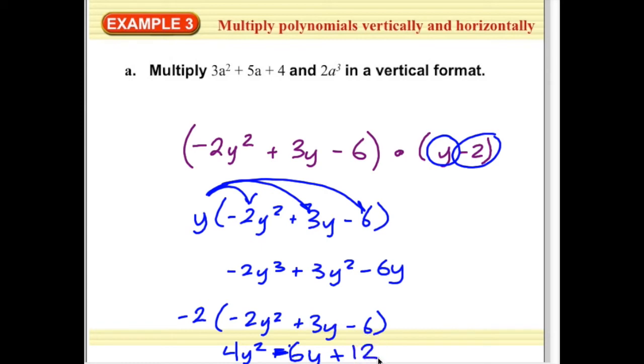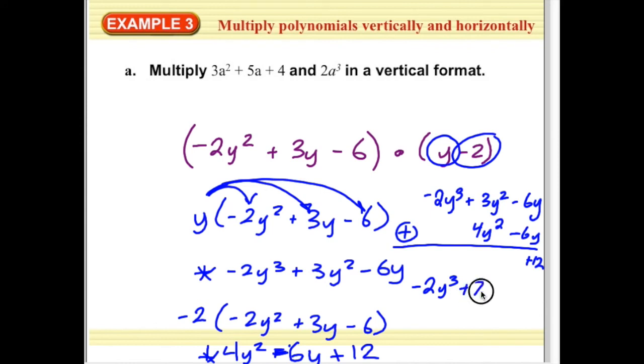And then I need to combine those two equations that I found using addition. So negative 2y cubed plus 3y squared minus 6y plus 4y squared minus 6y plus 12 is going to be negative 2y cubed plus 7y squared minus 12y plus 12. And that's my solution for multiplying two polynomials.